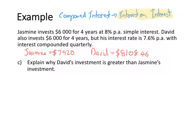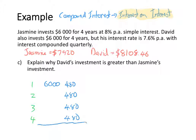Looking at Jasmine over the 4 years, she started off with $6,000 and each year she earned $480 in interest, giving her a total of $7,920 at the end.